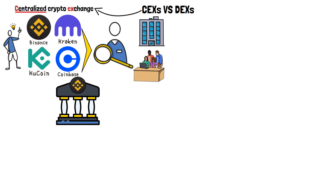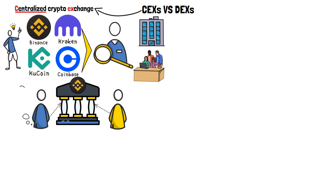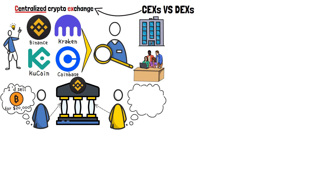On top of that, CEXs are also known for how they deal with customers' funds, as well as how they execute orders. Centralized exchanges use traditional order booking processes — you place an order to buy or sell some crypto, and it gets matched with another person's order of the opposite nature. To understand DEXs vs CEXs better, think of it this way.